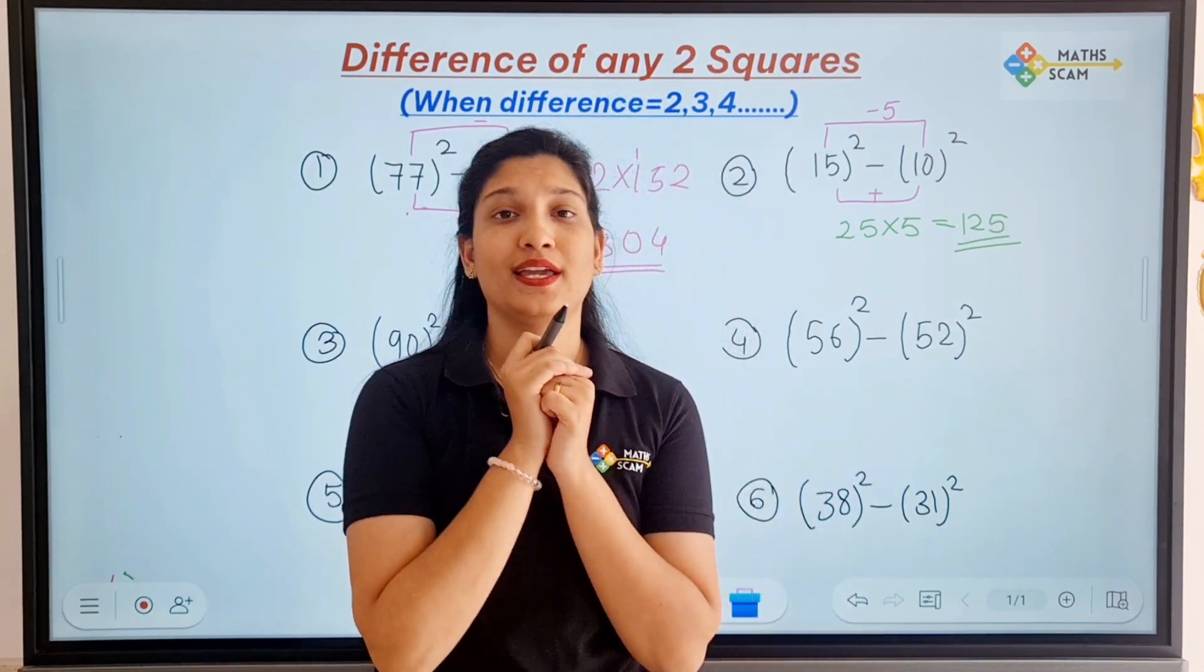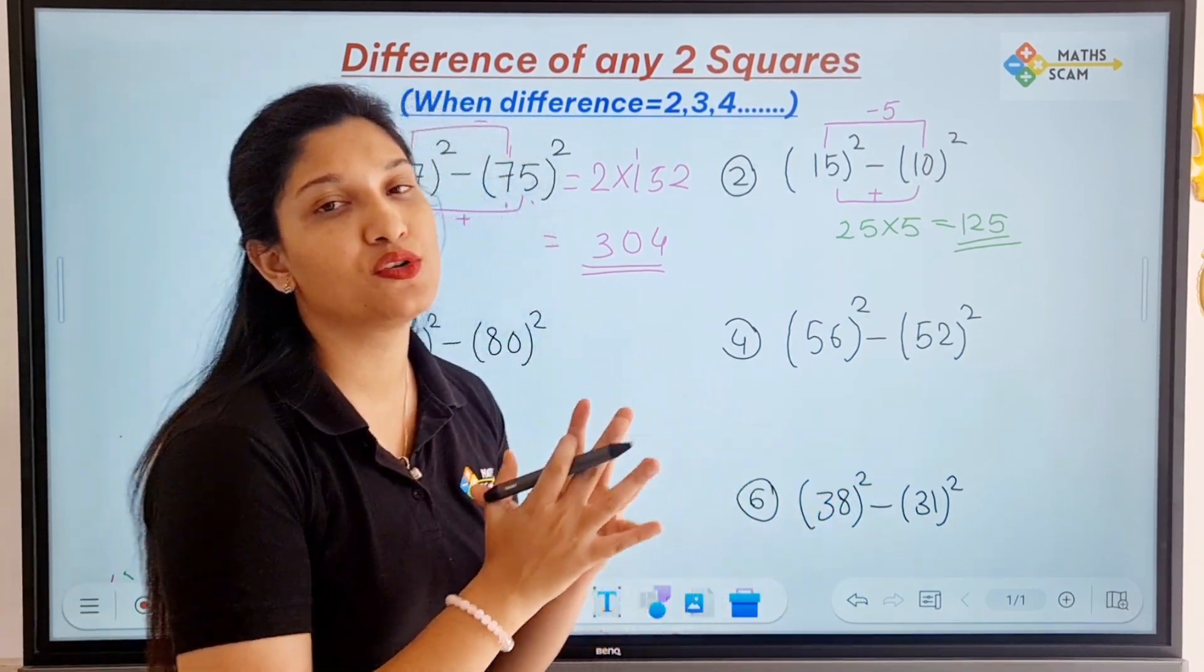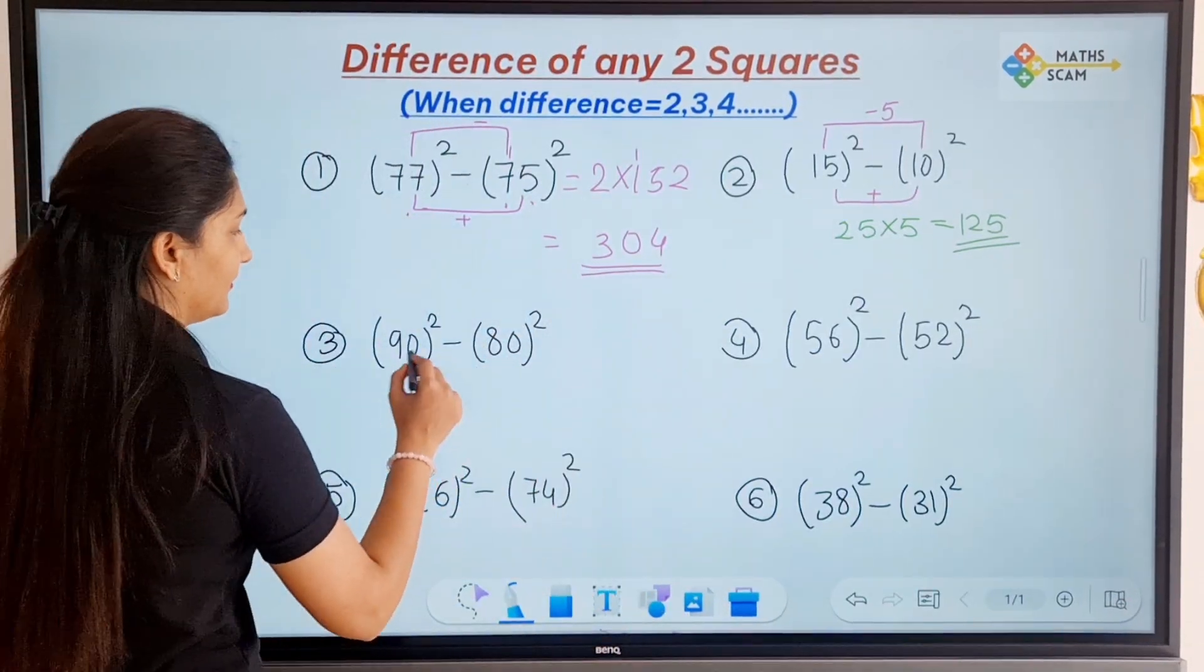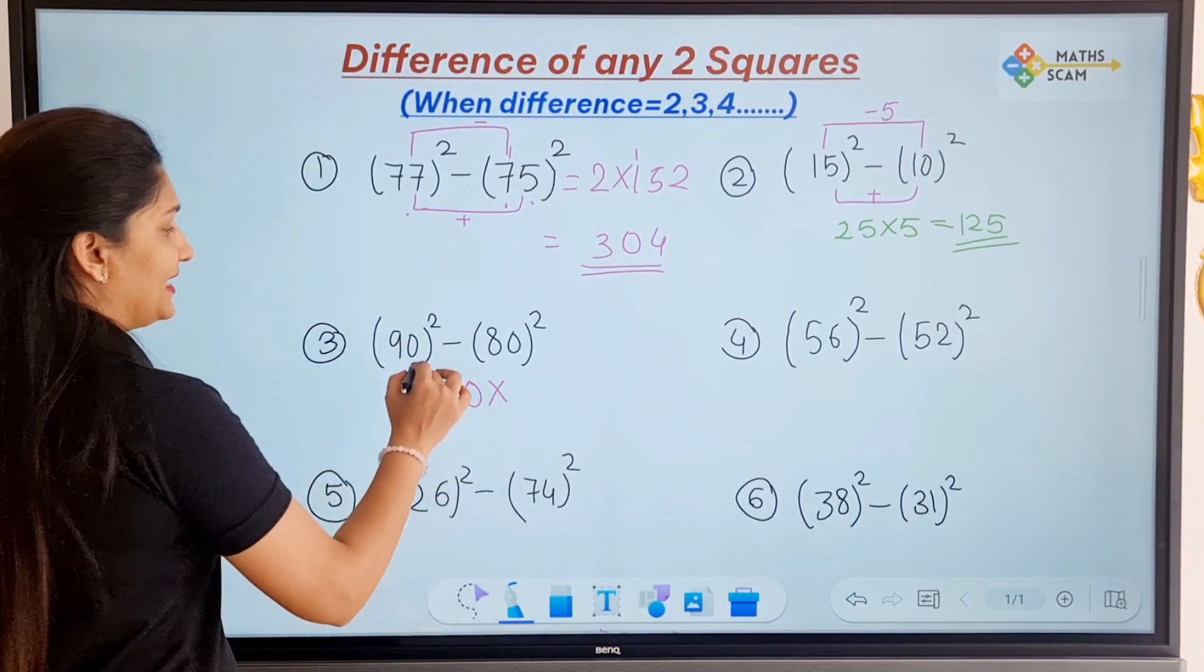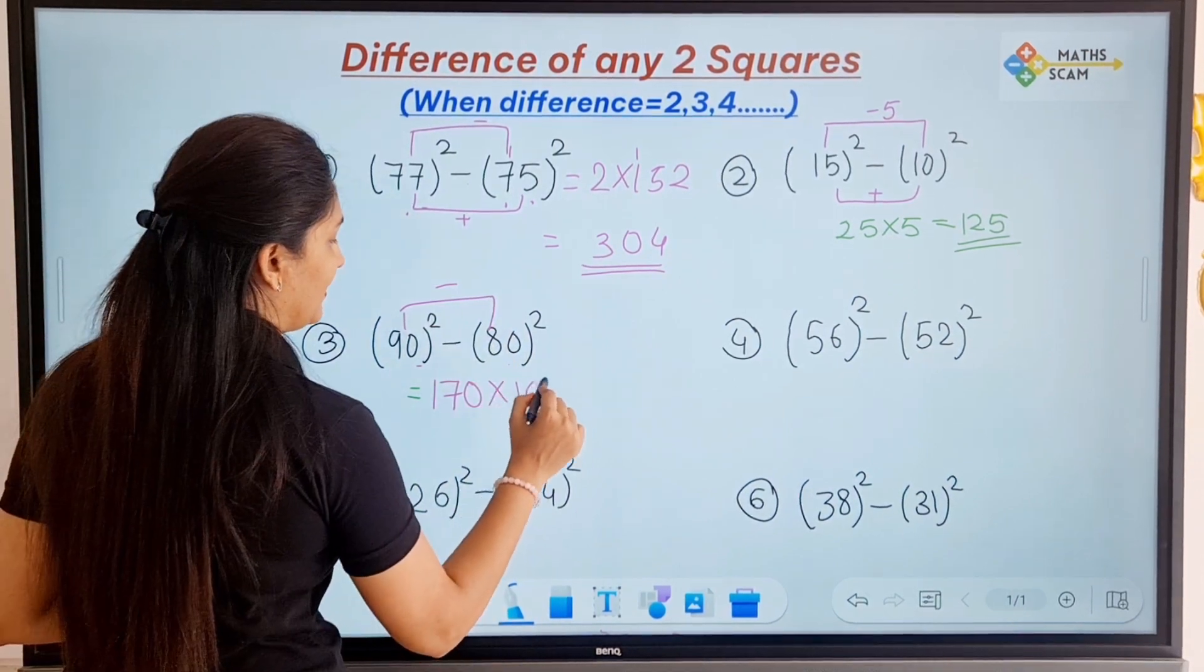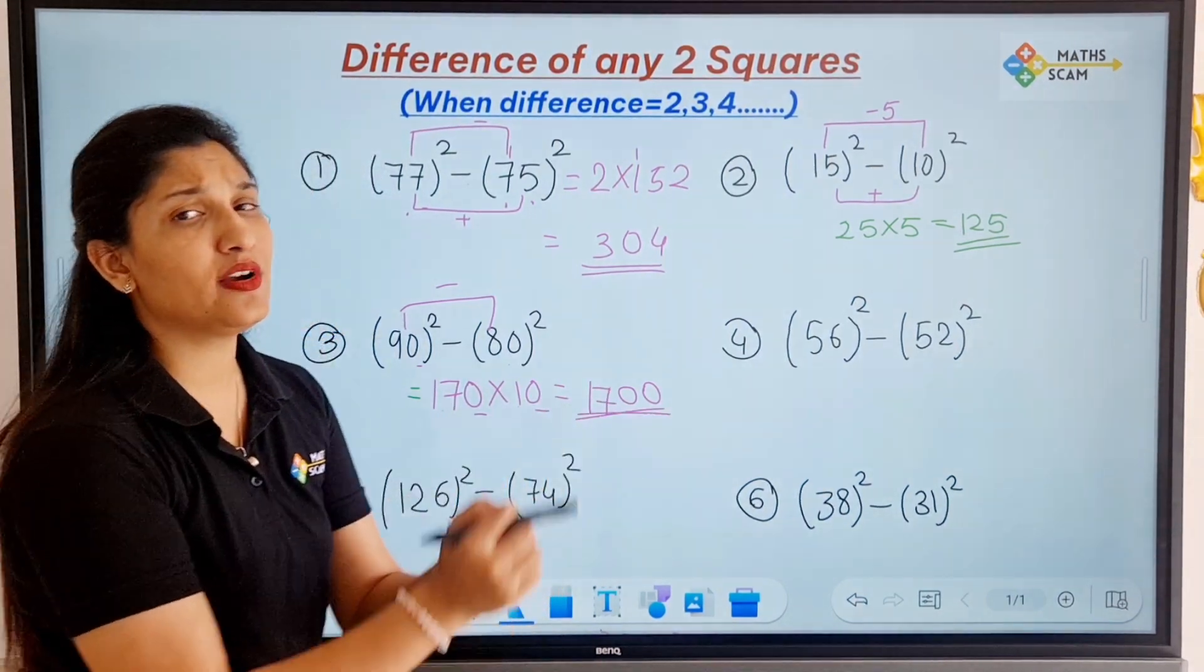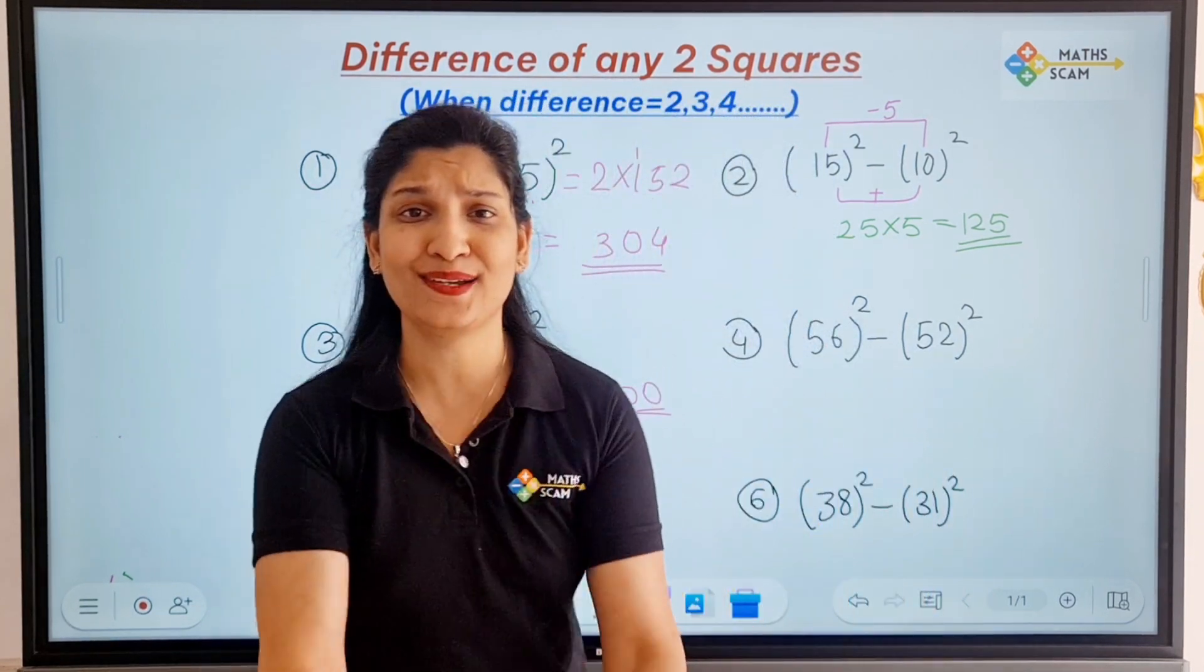What we are doing is we are just adding the numbers, subtracting the numbers, and the answers we are going to multiply. The next one is 90 square minus 80 square, very easy. Addition is 170, difference is 10. 170 into 10 is 2 zeros, 0 0, 17 ones are 17, answer is 1700. See, you are getting the answer without actually finding the square numbers and their difference.